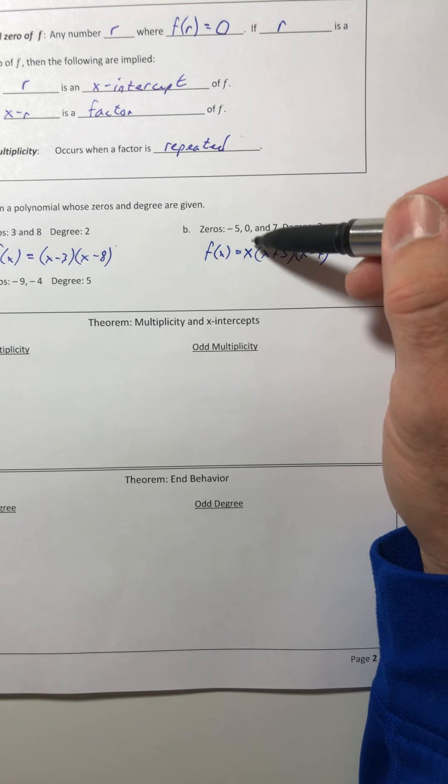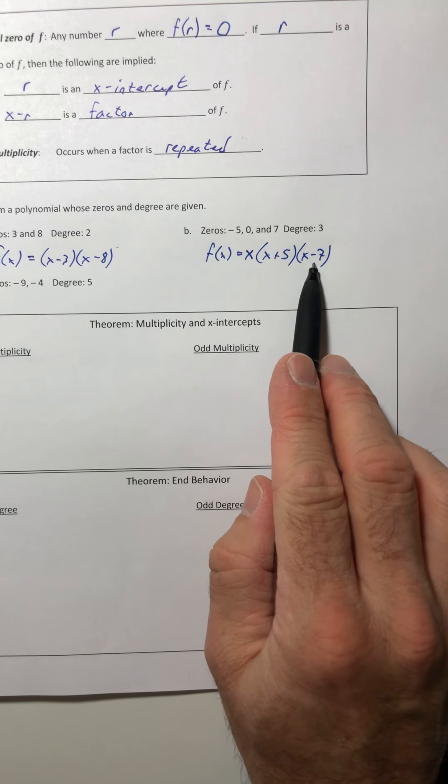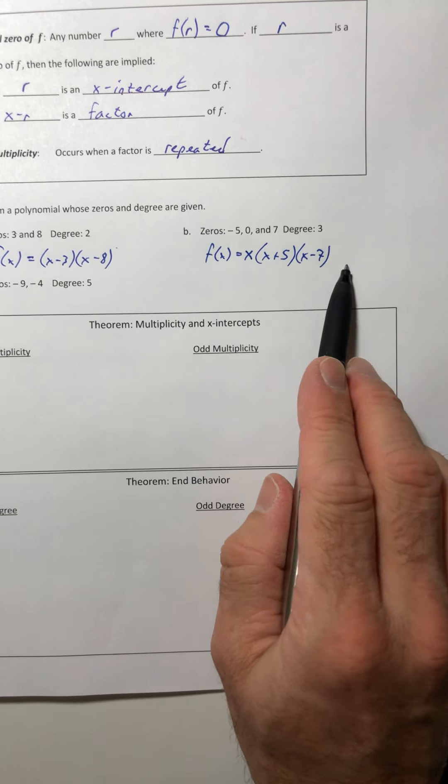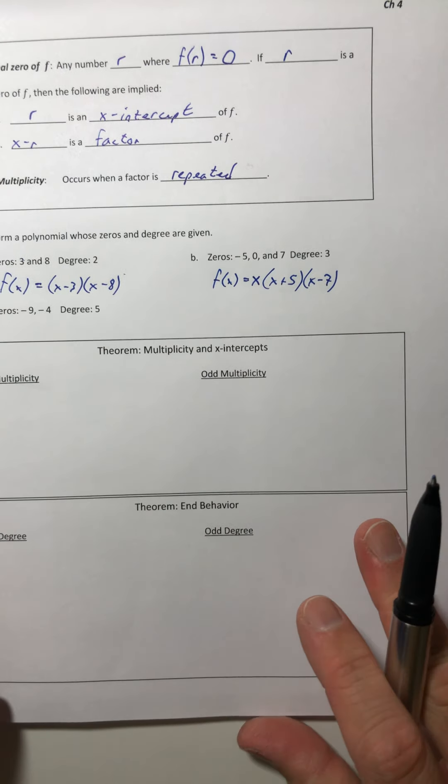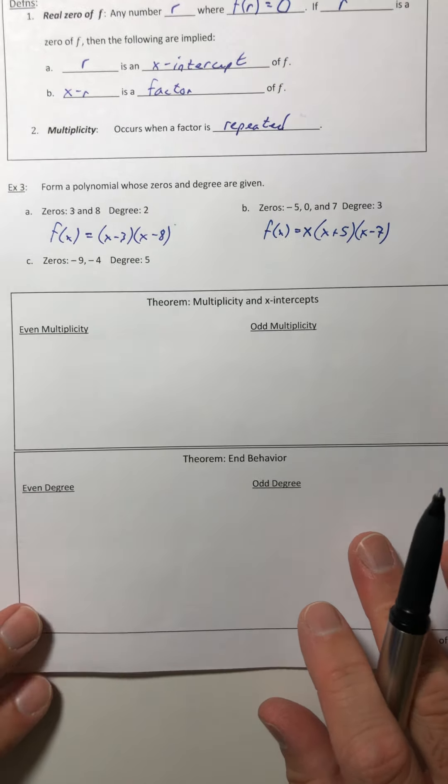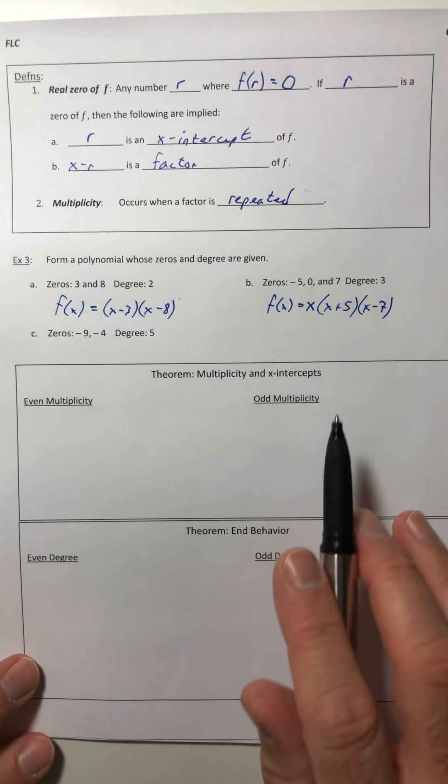And then you can just stick that out in the front. Technically, it doesn't matter like what order you put these factors into. So if you wanted the x in the back, in the middle, have the x minus seven all the way in the front, that's up to you. Okay, and then if you check this one, this one does have a degree of three.